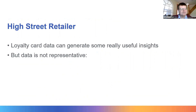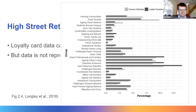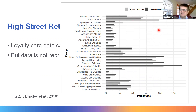Loyalty card data is also really helpful. This is some work using data from a high street retailer. We have to remember the data is not representative — this analysis looked at the retailer's customers split by geodemographic group. Some groups are really underrepresented: rural tenants, for example, are much less likely to have one of these loyalty cards than the average person. Equally, some groups are overrepresented — semi-detached suburbia residents are much more likely to have one. So we need to bear this in mind when working with this data.